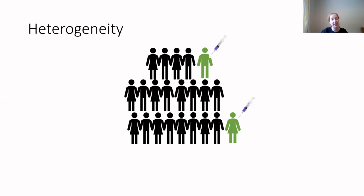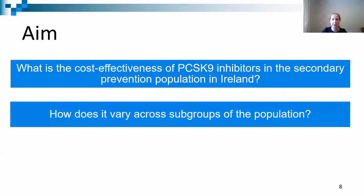In Ireland, following two HTAs, evolocumab was found not to be cost-effective at the list price. However, following price negotiations, it was reimbursed subject to a strict reimbursement application system. Criteria include LDL-C thresholds and history of MI or bypass. Alirocumab was also recently reimbursed. But in the economic evaluations published in the literature to date, there was limited consideration of heterogeneity in terms of cardiovascular history and other risk factors. Therefore, the aim of the thesis was to quantify the cost-effectiveness in the secondary prevention population in Ireland and to examine how it varies across subgroups.